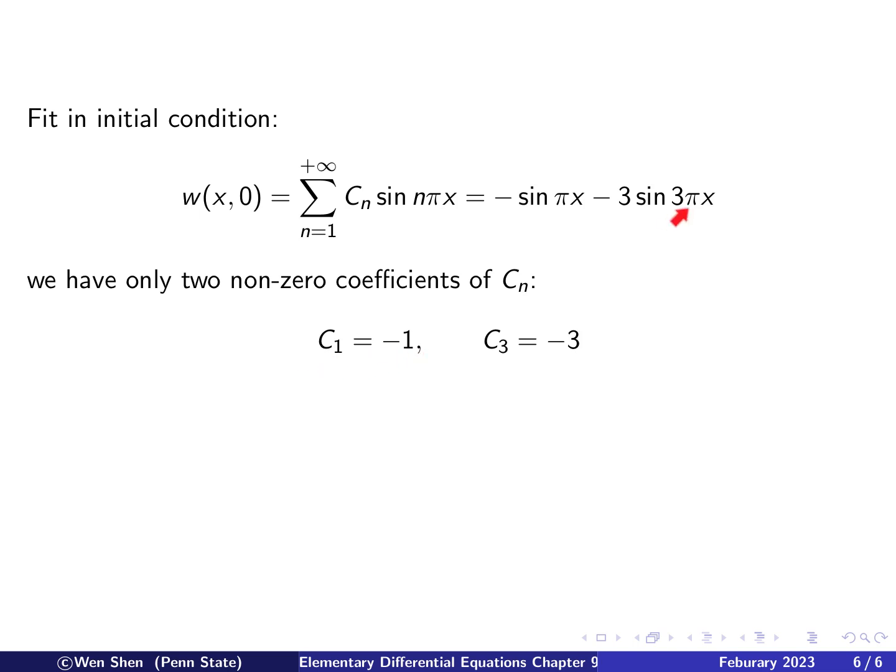Okay, we can plug this back and write out the solution for w, which will contain only two terms. One term is for n equal 1, we get c_1 is negative 1, and this is pi squared t, and the second term is when n is 3, so I have 3 pi x here, and then 3 squared, which is 9 here, and c_3 is negative 3.